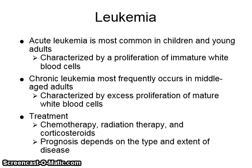Acute leukemia is most common in children and young adults, and is characterized by a proliferation of immature white blood cells. Chronic leukemia most frequently occurs in middle-aged adults and is characterized by excess proliferation of mature white blood cells. It is treated with chemotherapy, radiation therapy, and corticosteroids. The prognosis depends on the type and extent of the disease.